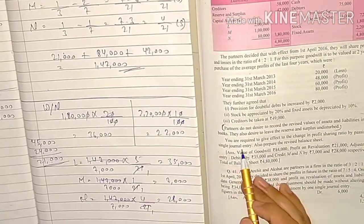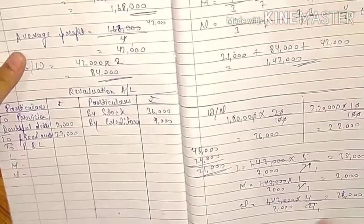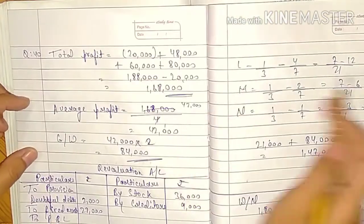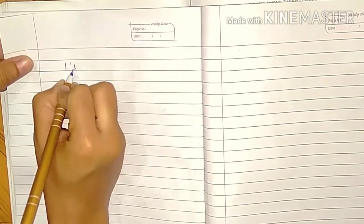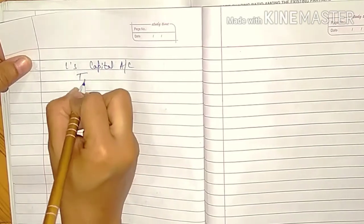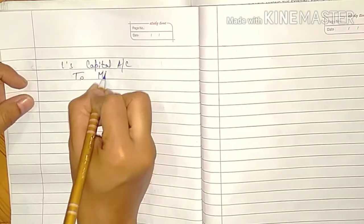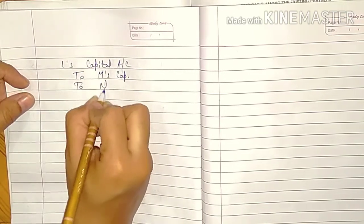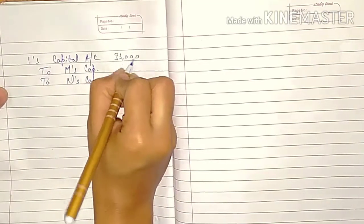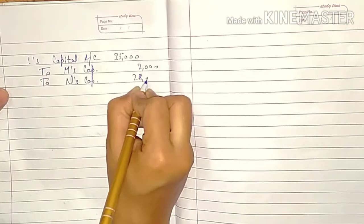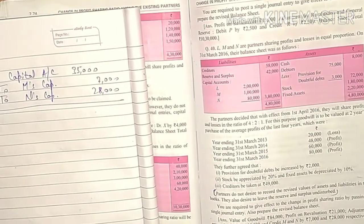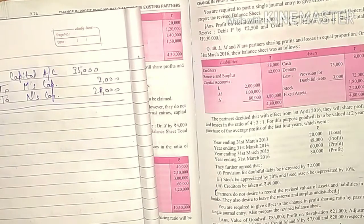Now we prepare the general entry. Partners who gain are debited; partners who sacrifice are credited. L gained, so: L's capital account debit 35,000. M and N sacrificed, so: credit M's capital account 7,000 and credit N's capital account 28,000. The general entry is complete. Revaluation profit 21,000; adjustment entry — L: 35,000, M & N: 7,000 & 28,000.